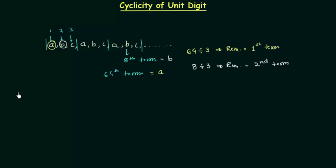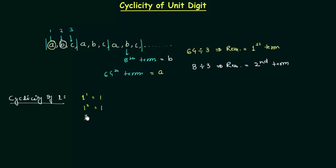Very simple. Now we will move to cyclicity of 1. One raised to power 1 is 1, one raised to power 2 is also 1, one raised to power 3 is 1. In the same way, 1 raised to power n is 1. So the cycle of 1 is 1 itself.